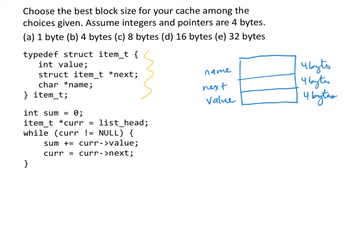The value is four bytes because it's an integer, and next and name are four bytes each because they are both pointers.